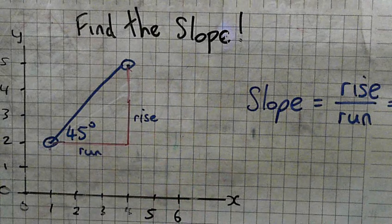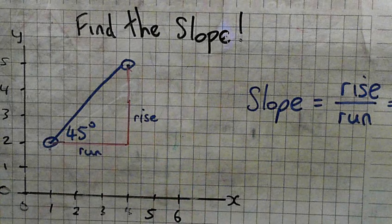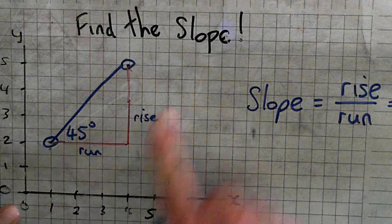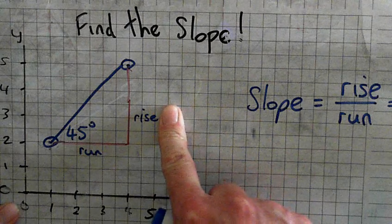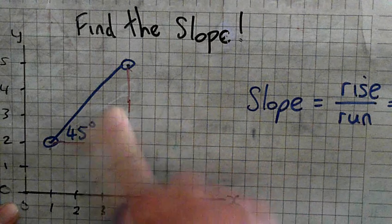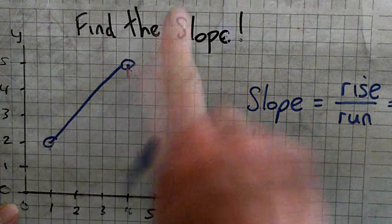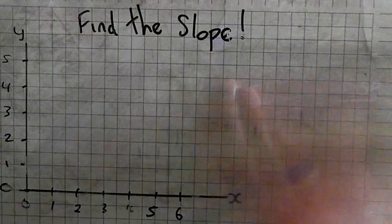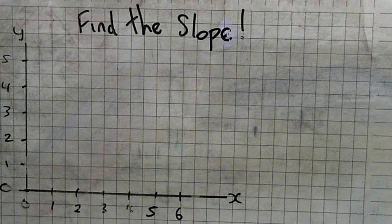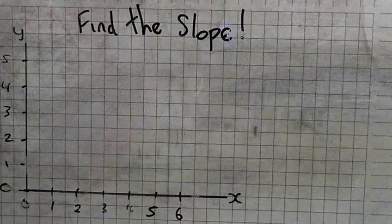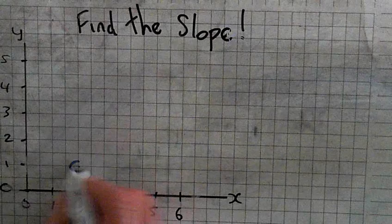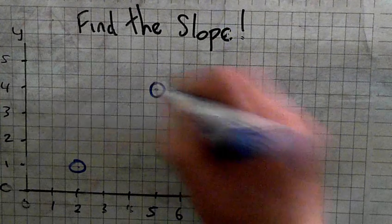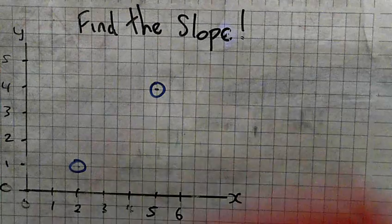45 degrees is a slope of 1, or 6 over 6. Watch. This slope can also be, watch. I'll leave the slope of this line.